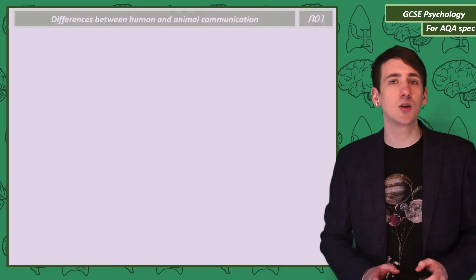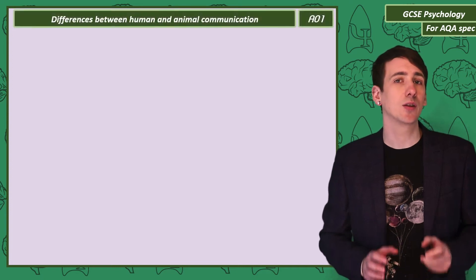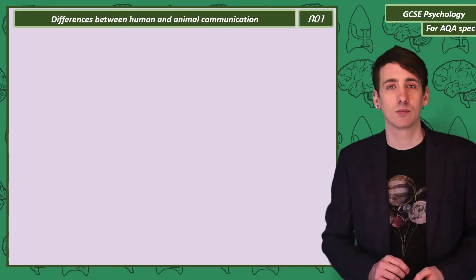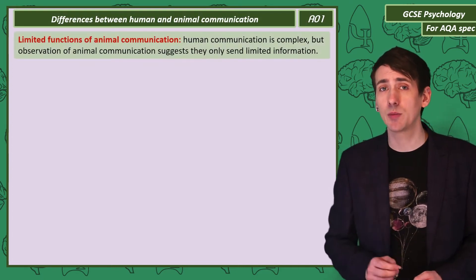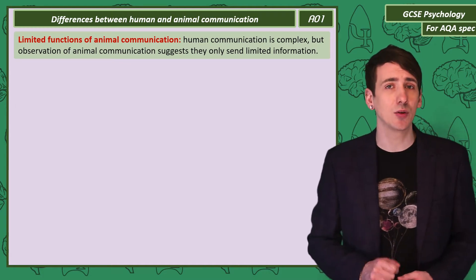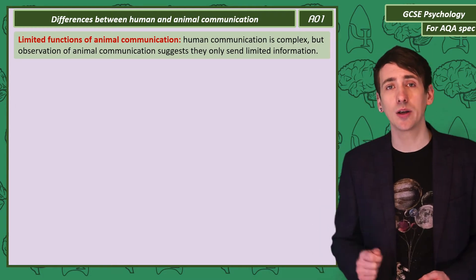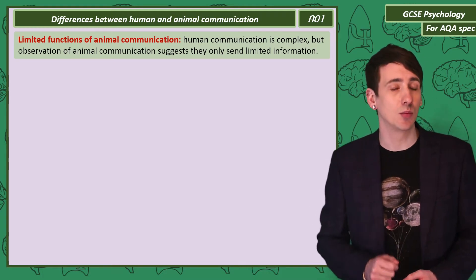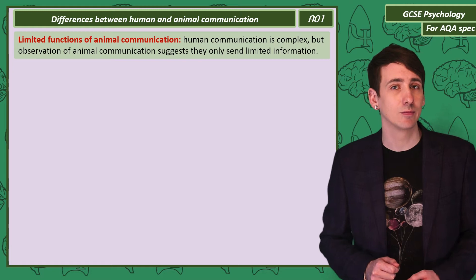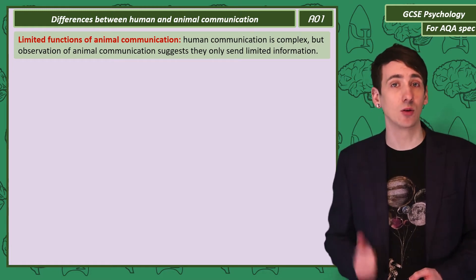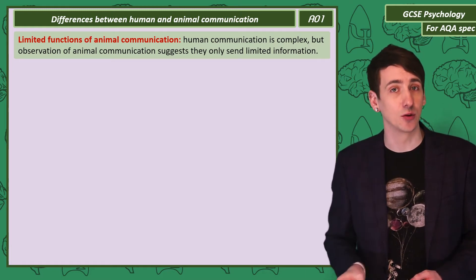Let's start by considering the communication abilities of animals. In comparison to complex human language, observation of animals suggests they can only communicate in a limited number of areas. The areas we should consider are survival, reproduction, territory, and food.